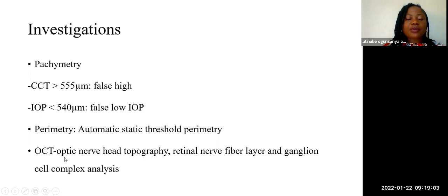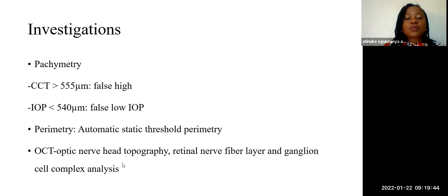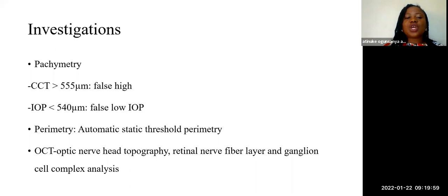The damage likelihood scale in OCT printout is essential to know the baseline and to monitor for progression in an objective way. Because at times, central visual field assessment and perimetry may not be reliable if the patient is not cooperative, and such results cannot be used. The characteristic visual field defects in glaucoma include nasal step, paracentral scotomas, temporal wedge, altitudinal scotoma, arcuate scotoma, or in advanced cases, both superior and inferior hemifield arcuate scotoma.